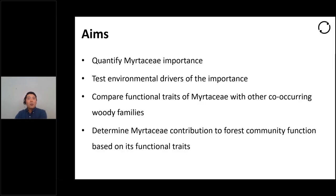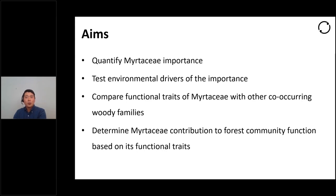Our primary goal was to quantify Myrtaceae importance across natural forest ecosystems in New Zealand based on their diversity and abundance. Then to test the environmental drivers of the importance. And using a functional trait approach, we aim to determine how Myrtaceae is different from other co-occurring woody families in terms of their functional traits. Finally, we aim to compare the family's contribution to community-weighted functional traits relative to their importance values to determine their potential functional role in New Zealand's natural forest ecosystems.